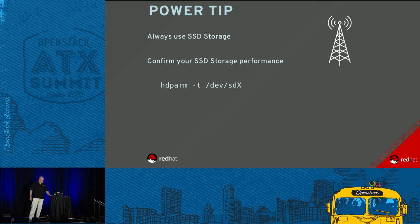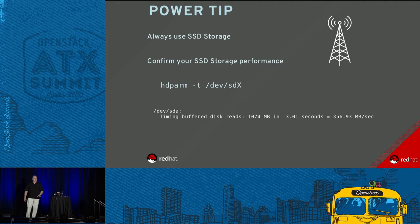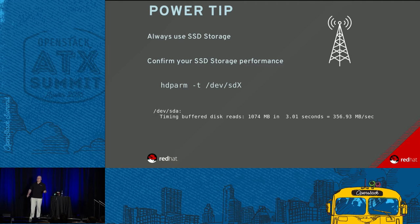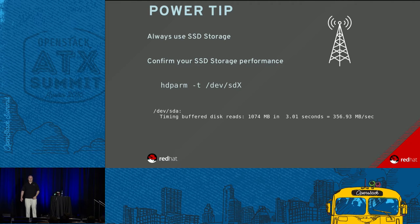A really simple test is hdparm. hdparm will check that your hard drive is working correctly. A given SSD should be getting something in range or above; if you're talking about spinning rust, you'll be down around 100 megabytes a second. I've had strange cases where external hard drives get cranky and drop back to USB 2 mode - and then all bets are off and your demo is going to really suck. That's a real simple test: the moment you plug the drive, just run that, and you know you're going to get the performance you expect.